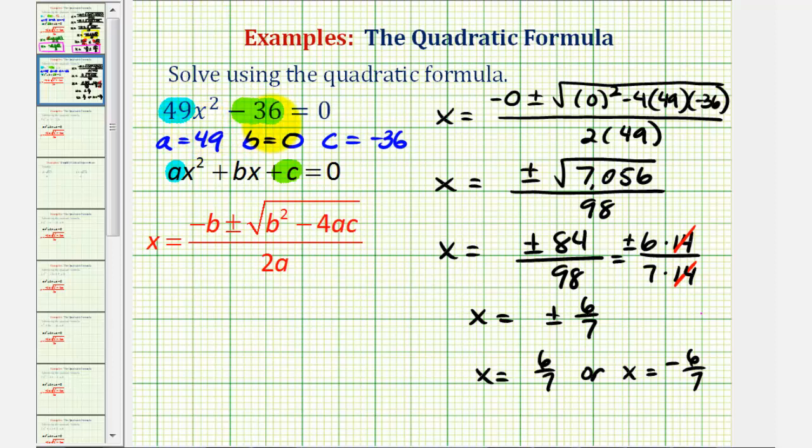49x² - 36 is a difference of squares, so it'll factor into two binomial factors. 49x² is equal to seven x times seven x. Thirty-six is a perfect square, since it's equal to six times six. And one binomial will be a sum, one binomial will be a difference.